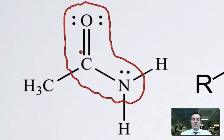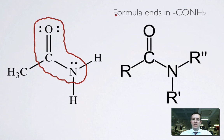So here is the amide functional group. And you can see it looks rather a lot like a carboxylic acid functional group, except instead of having OH here, we've got NH2. Now, if we're talking about a primary amide, so that is one where there's only one carbon attached to this nitrogen, then the formula will end in CONH2.